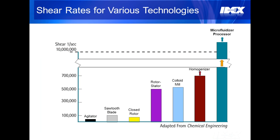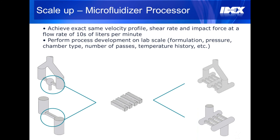The main benefit of the microfluidizer processor is the extremely high shear rate that we are able to generate, which is much greater than other technologies, as well as the inherent scalability of our processor. When we scale, we add additional microchannels placed in parallel to ensure that every microliter receives the same processing. This also ensures that processing conditions used at the lab scale are able to be replicated at the production scale with near-identical results.